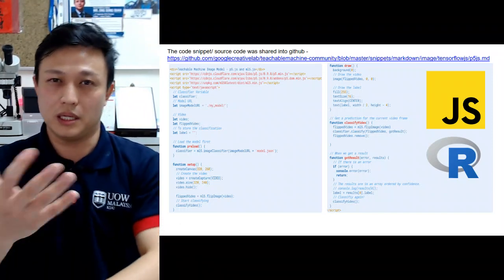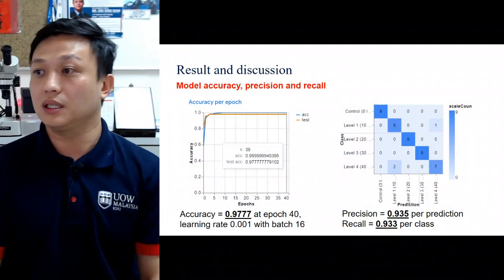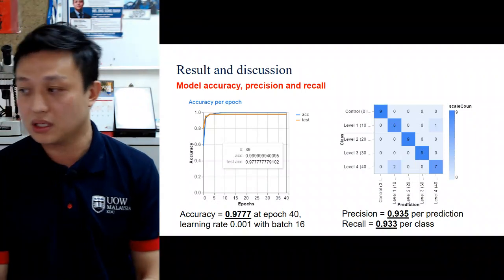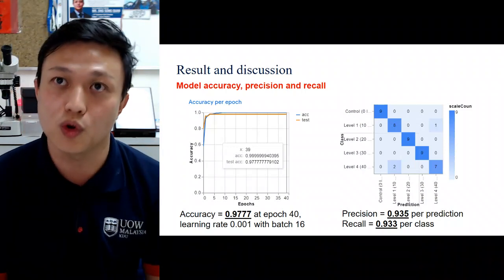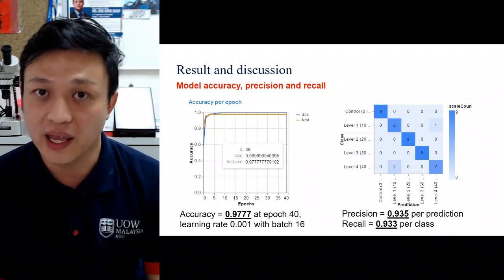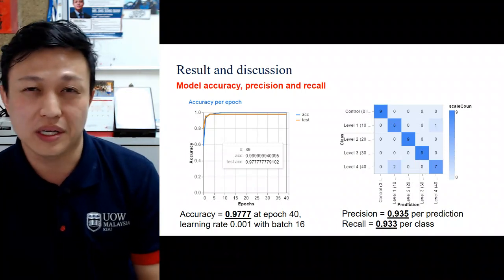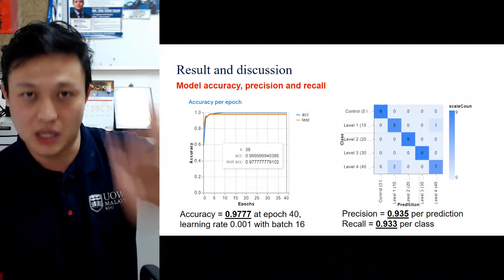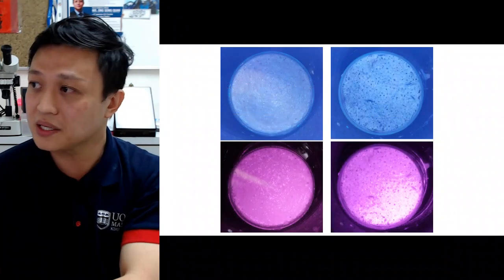Here are the results: accuracy is 97.77%, precision is 93.5%, and recall is 93.3%. Accuracy alone can be misleading, so precision and recall are very important. Precision tells you how well the model predicts unknown samples, while recall indicates how consistently the model provides good results across many repeated predictions.